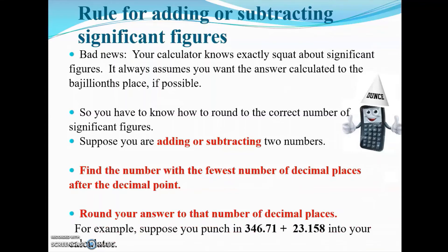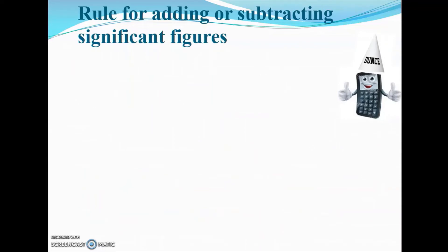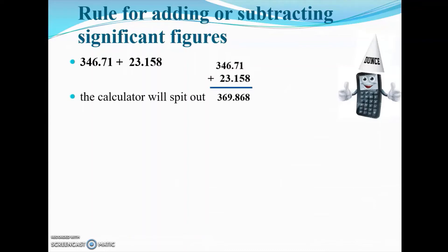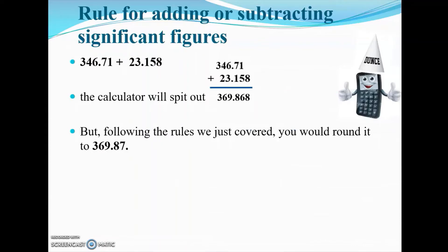For example, suppose you add 346.71 and 231.158 in the calculator. You're going to get 369.868 — that's what in fifth grade would be your answer. But taking significant figures into account for real-world work, you would round it to the fewest number of decimal places after the decimal point. The fewest here is two, so you round 369.868 to 369.87.